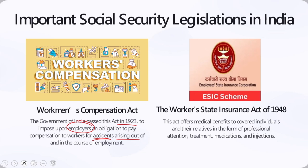Please note that informal labors, armed forces, and workers protected by the Workers' State Insurance Statute of 1948 are exempt from this act. The Workers' State Insurance Act of 1948 was enacted to offer medical care and job security to industrial employees who were specifically ill. It offers medical benefits to covered individuals and their relatives in the form of professional attention, medications, treatment, and injections — options extended to households as well.